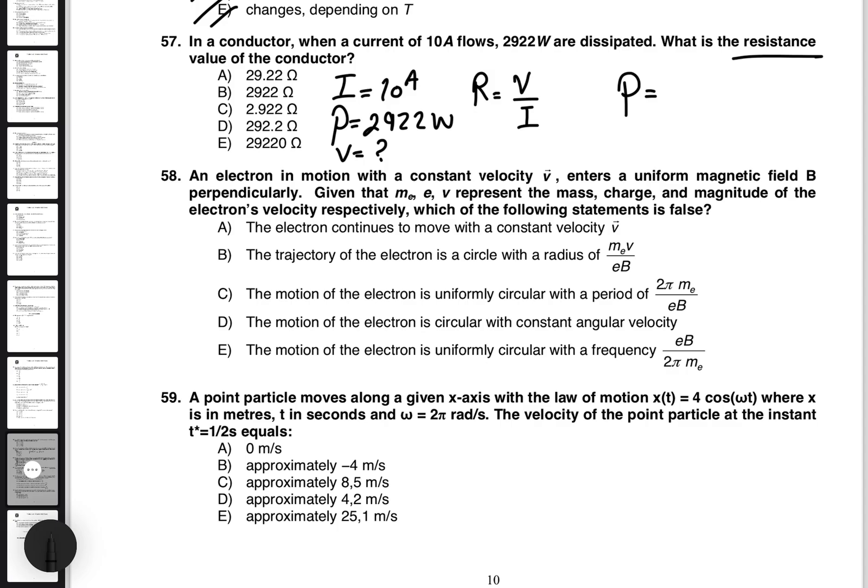I'm going to find power by using an equation that includes voltage. Voltage times current works, right? So we can say the voltage is going to be the power, which is 2,922, divided by the amount of current, which is 10. So the voltage in this question is 292.2 volts. Now that we have the voltage, we can just divide the 292.2 by the amount of current, which is I, which is again 10. That gives us 29.22 amperes, which makes choice A the correct answer again.